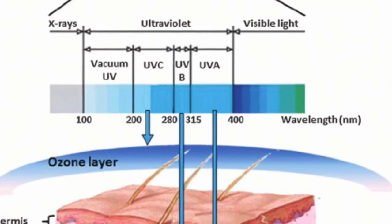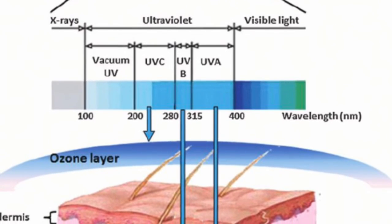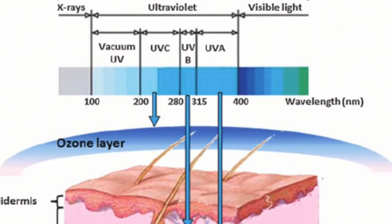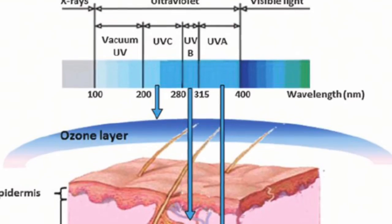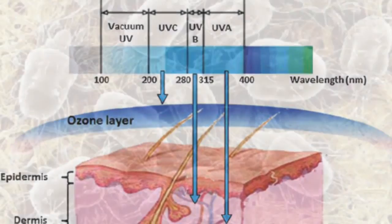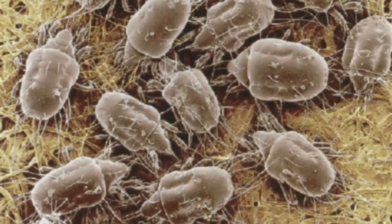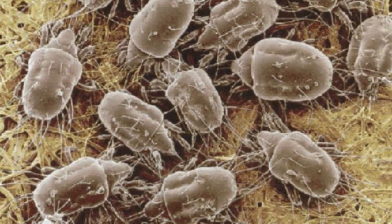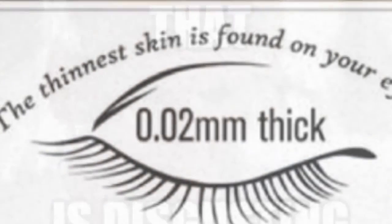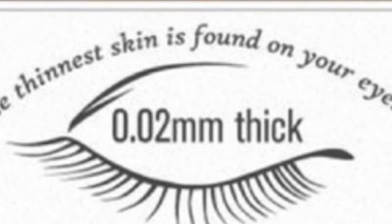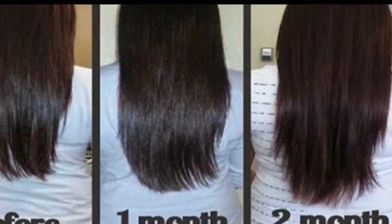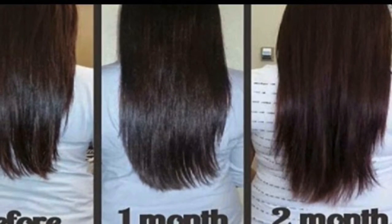Your nails grow five millimeters per week. When you injure yourself, the skin is able to heal by absorbing the sun's rays to prevent the tissue inside from damaging. Bed bugs exist to eat our dead skin while we sleep. Your eyelids have the thinnest skin, and hair grows one centimeter per month.